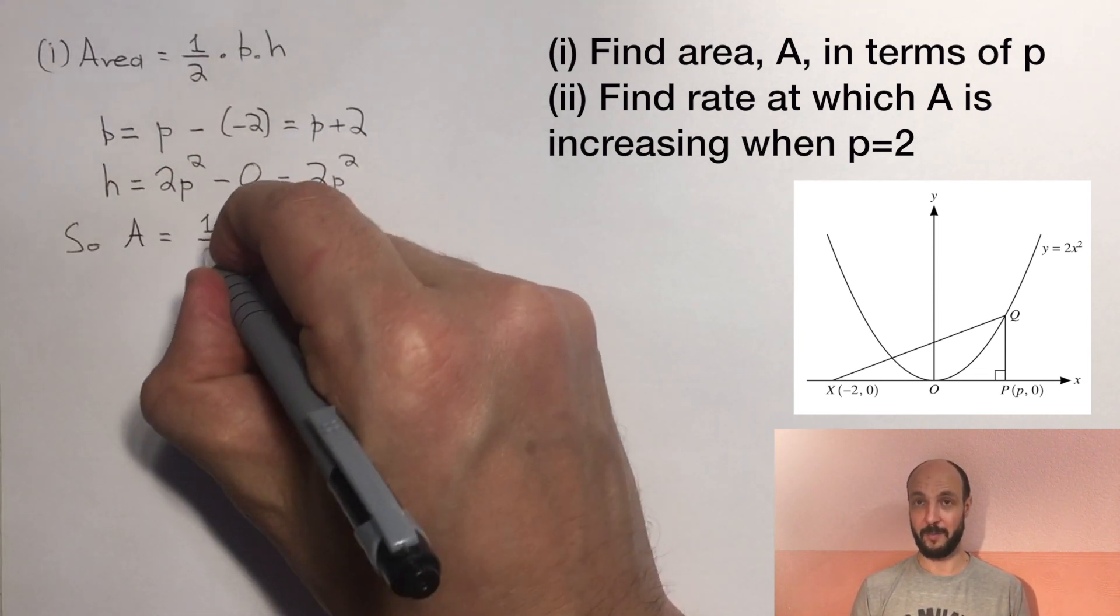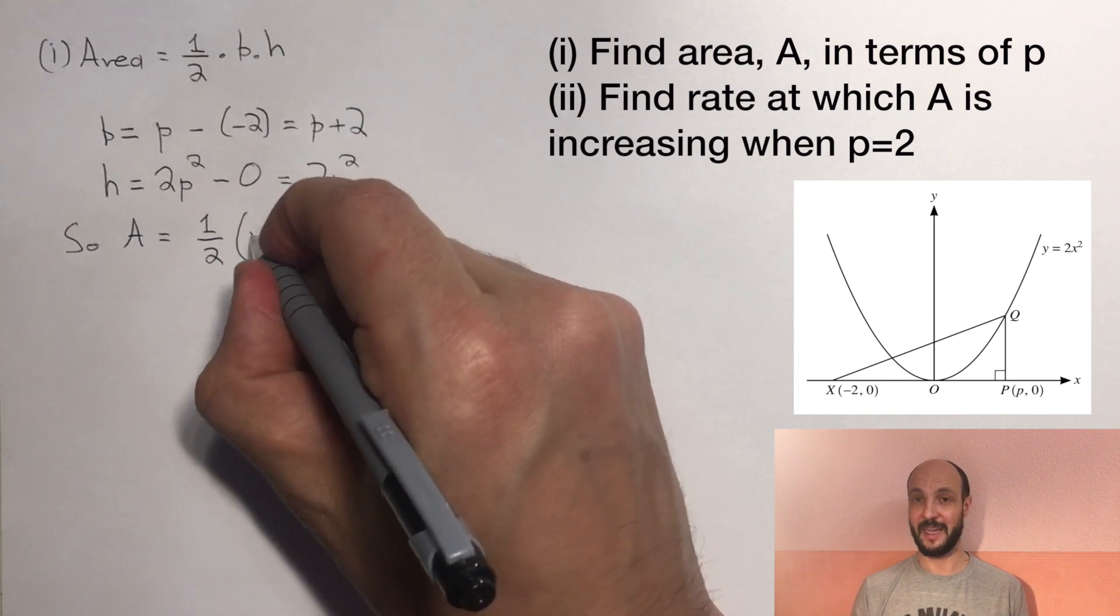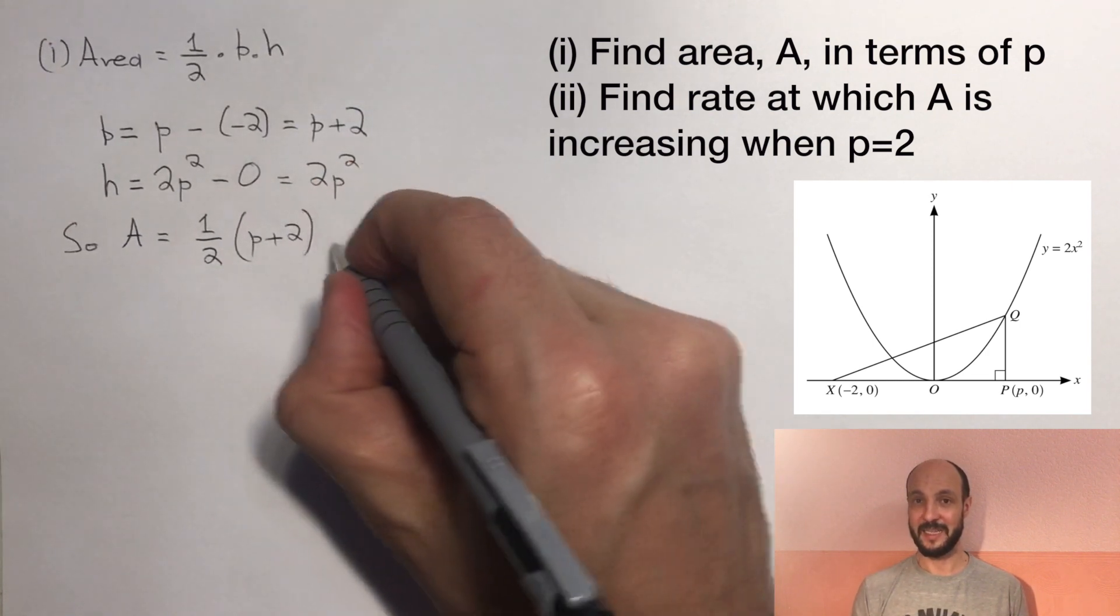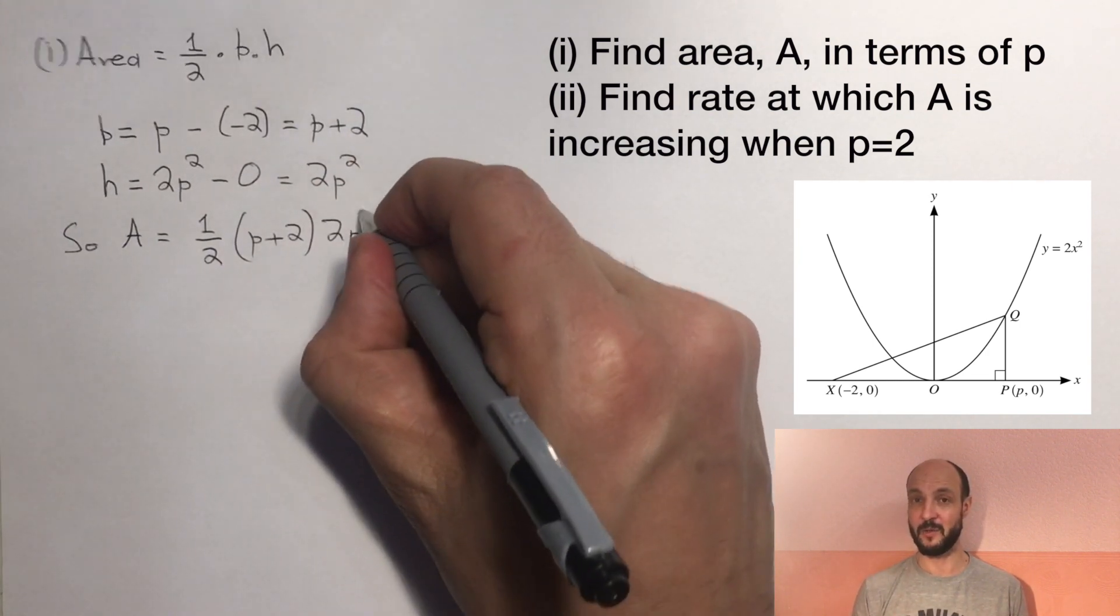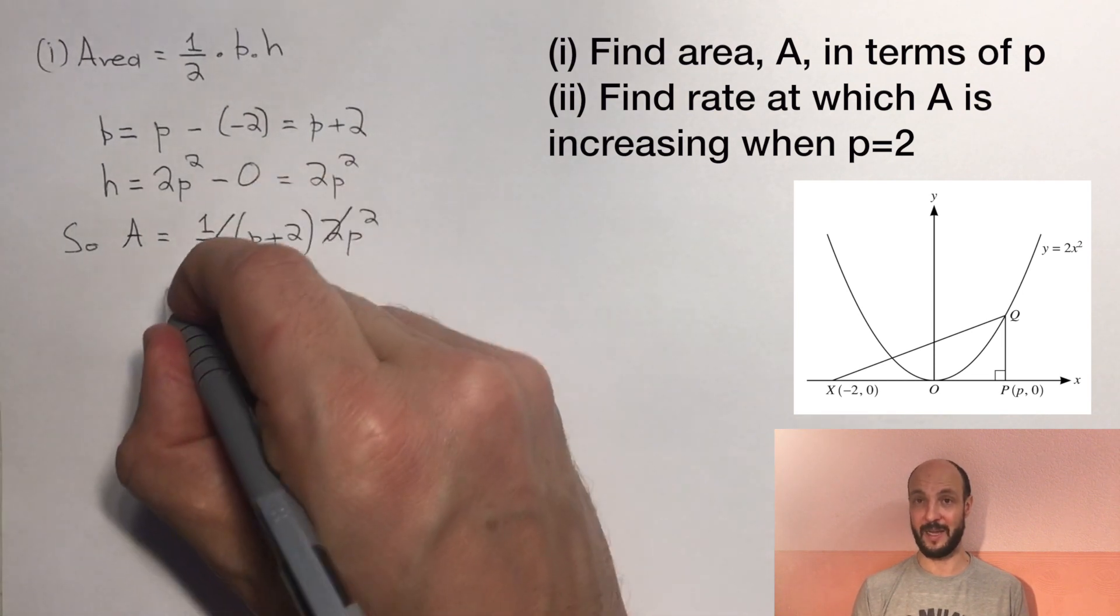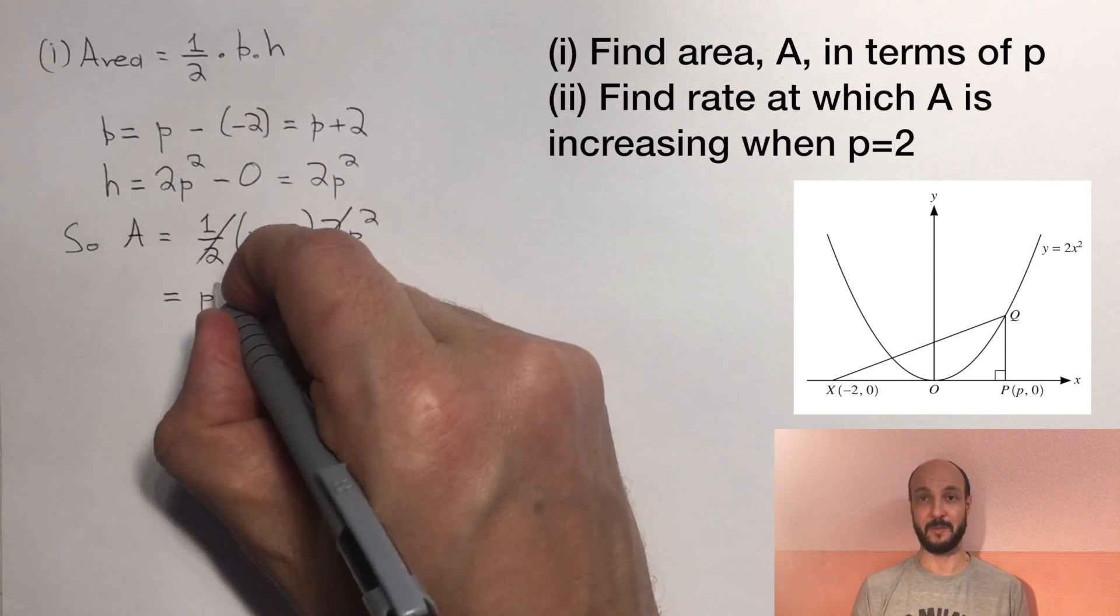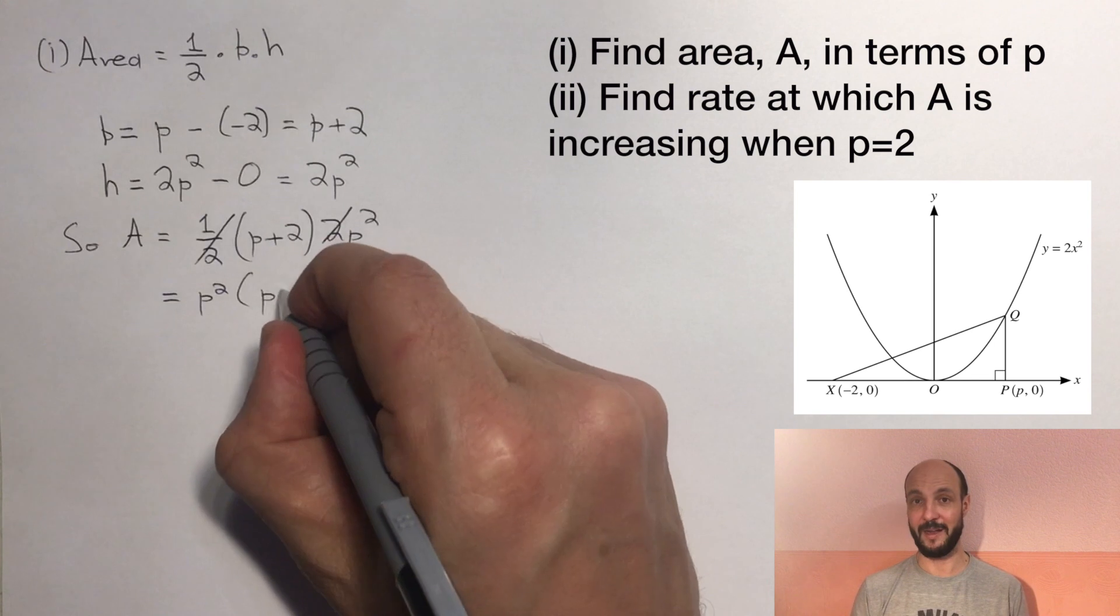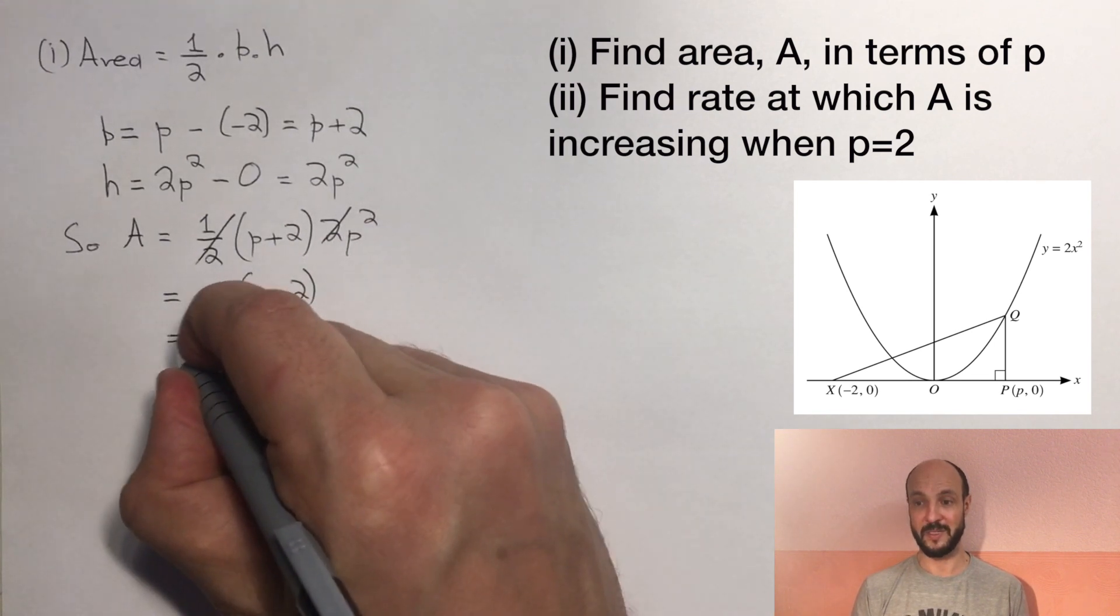So we can straightforwardly apply our area formula and say half base times height is half times p plus 2 times 2p squared, which is p squared times p plus 2, or we can write that as p cubed plus 2p squared.